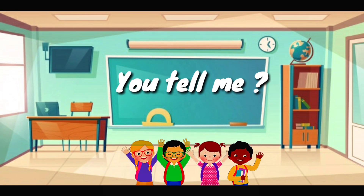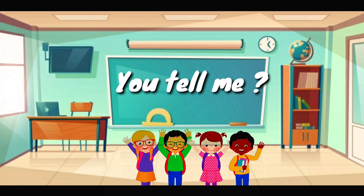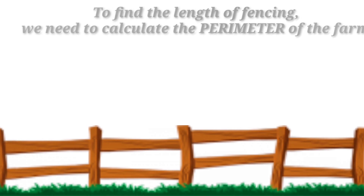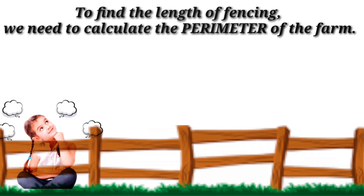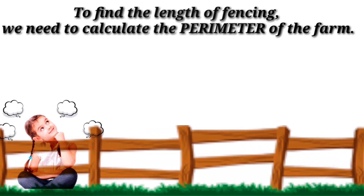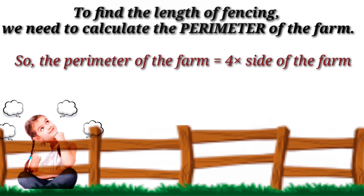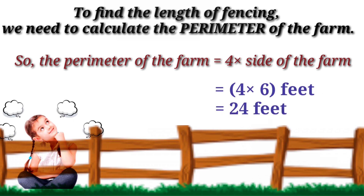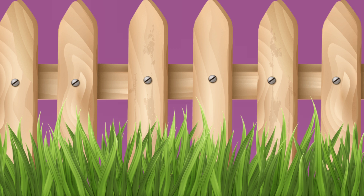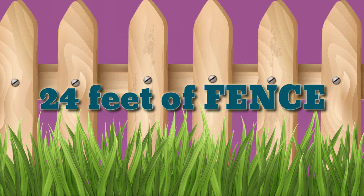How can we find the length of the fence? By calculating the perimeter of the farm, because fencing farm ki boundary pe ki jati hai. The formula for the perimeter of a square is 4 multiplied by side. The side is 6 feet, so 4 × 6 = 24. The farmer requires 24 feet of fence in total.